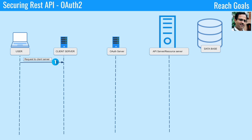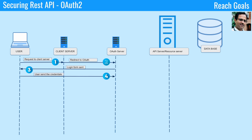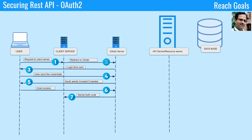The user initiates a request to the client application. The request is redirected to the OAuth server for authentication. The OAuth server sends a login form to the user to grant access. The user provides credentials and the OAuth server determines whether to grant access. If user consent is required, the OAuth server sends a consent form to the user. The client server grants access.